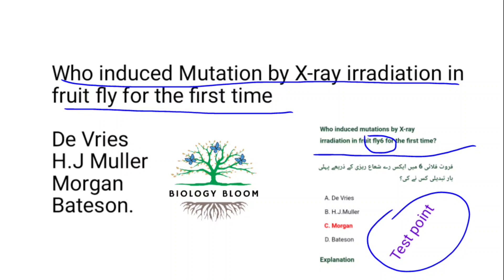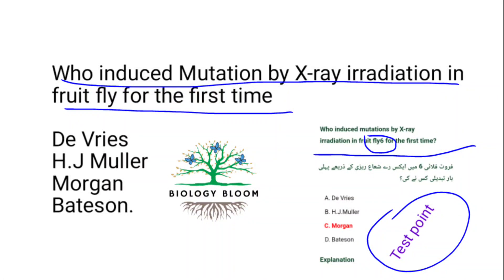The answer is Muller, not Morgan. Herman J. Muller was the first to induce mutation by X-ray irradiation in fruit fly — H.J. Muller is correct. Thomas Hunt Morgan worked on fruit flies first, but Muller later discovered X-ray induced mutation.